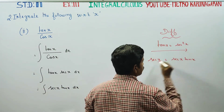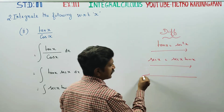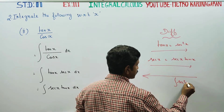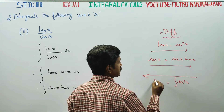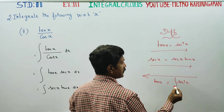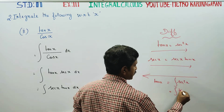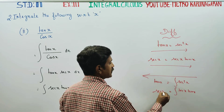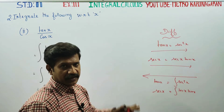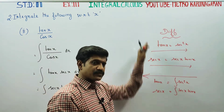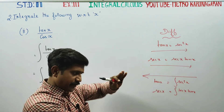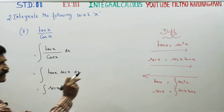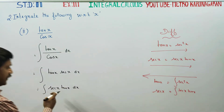So if that is differentiation, then the opposite gives us integration. Integration of secant squared x — going the other way — you have to write tan x. And integration of secant x tan x, going the opposite way, gives secant x. You don't need to memorize integration formulas separately — just take the differentiation formulas and apply them in the opposite direction.